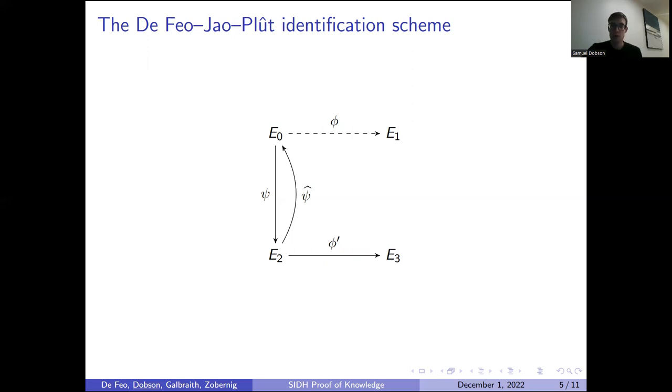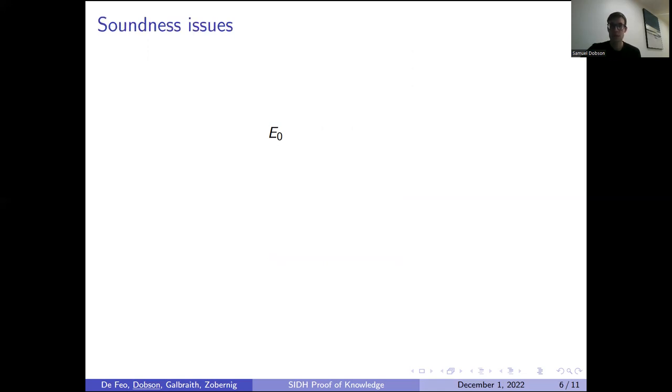Unfortunately, though, we showed in our paper that this proof isn't actually valid with a simple counterexample. We start with a random walk from E0 to a curve we'll call E2, take another random walk to another curve E3, followed by a third random walk to the curve E1. Now we're going to give out E1 as our public key and claim that we know an isogeny from E0 to E1.